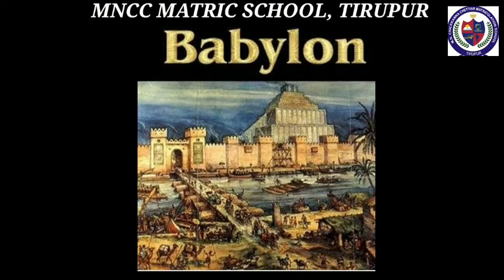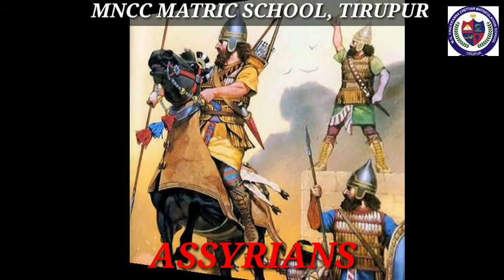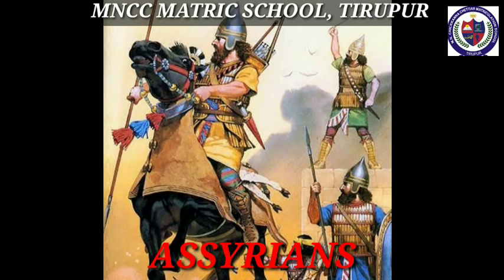Hammurabi, the sixth king of Babylon belonging to the first Amorite dynasty (1792 to 1750 BC), attained fame as a great lawmaker. Next, the Assyrians. The Assyrian kings were the priests of Ashur, the chief deity of Assyria. The Assyrian government was controlled by the emperor. Ashur was the capital city of Assyria.